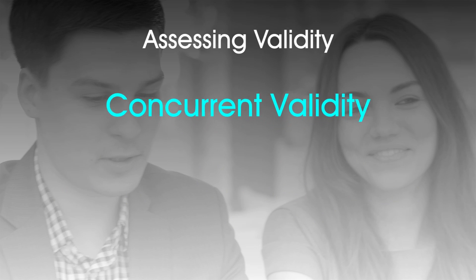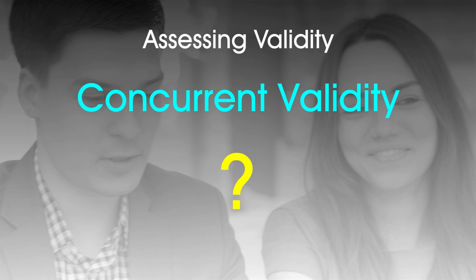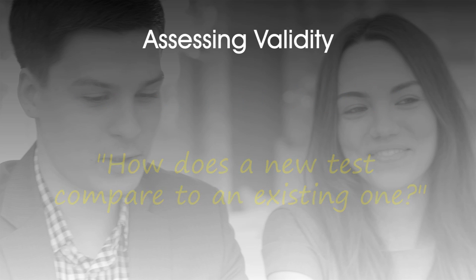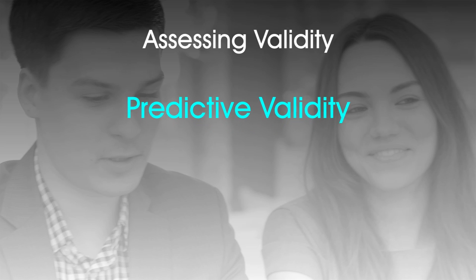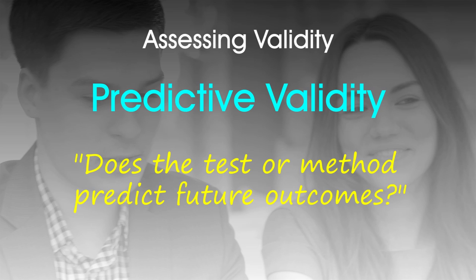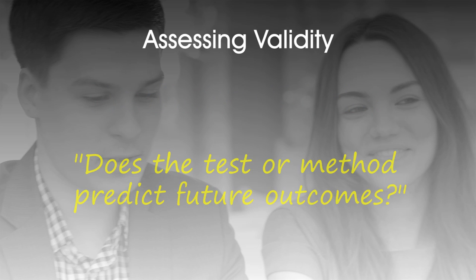Concurrent validity involves comparing a new test or method to an existing one — for example, how does a new way of measuring intelligence relate to an established one? Predictive validity tests whether a method effectively predicts future outcomes. For example, young children who score highly in IQ tests will tend to do well at school.